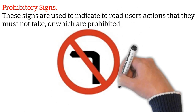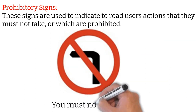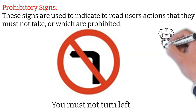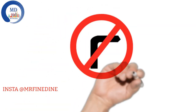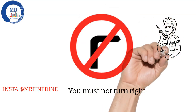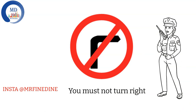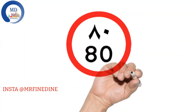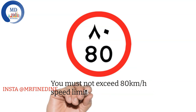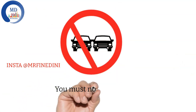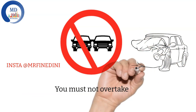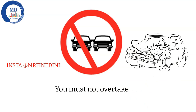Prohibitory signs are used to indicate to the road user actions they must not take or which are prohibited. This sign means you must not turn left. If we avoid any of these signs we are committing an offense. This sign means you must not turn right. These signs give you the road speed limit — if it shows 80, the speed limit is 80; if 120, the speed limit is 120. You may also see 60 or 40. If you see this sign, it means you must not overtake — you will usually find this on a curve or near a crossing.